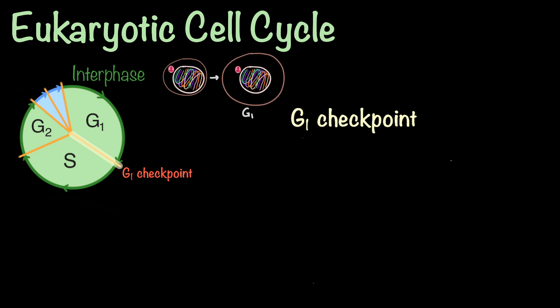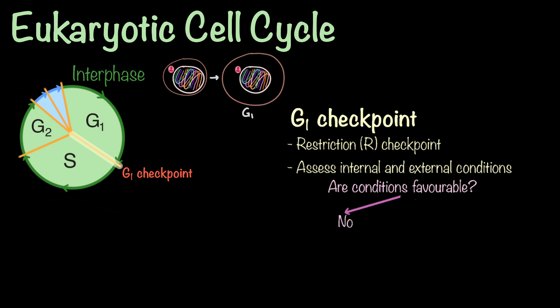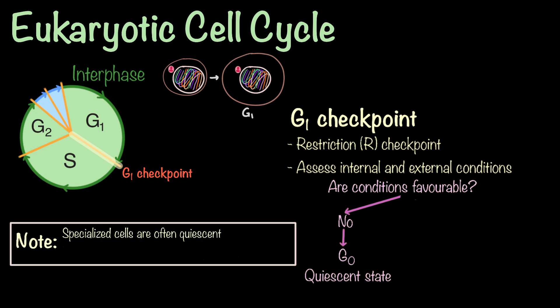This is when the cell reaches the G1 checkpoint, also called the restriction or R checkpoint. If conditions are not favorable, the cell can exit the cell cycle and enter what's called the G0 stage. The cell is in a quiescent state where it continues its specialized function but halts activities related to cell division. The more specialized a cell becomes, the less likely it is to continue reproducing itself. Neurons and muscle cells often enter the G0 stage and remain quiescent for extended periods, focusing on their specialized functions without actively dividing. These specialized cells are replenished by the reproduction of less specialized precursor cells called stem cells.